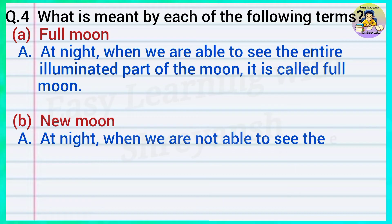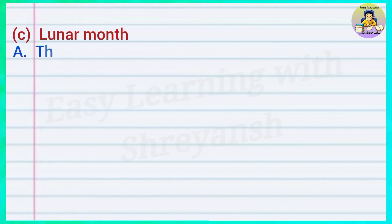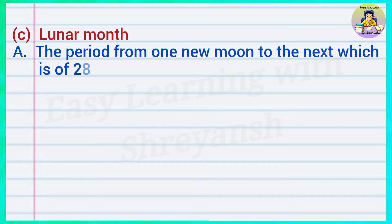Answer: At night, when we are not able to see the entire moon as it does not receive the Sun's light, it is called new moon. C) Lunar month. Answer: The period from one new moon to the next, which is of 28 to 30 days, is called a lunar month.